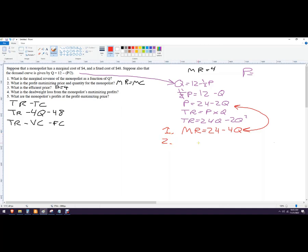Next for number two, I want to set this equal to four. So MR equals MC. So MC is four. My hand is cold, some weird answers here. So four equals 24 minus four Q. This would be four Q equals 20. And then Q equals five. So now I've got a quantity five.